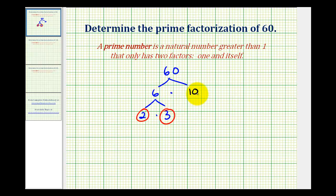Two factors of 10 would be 2 and 5, since 2 times 5 equals 10. We already know 2 is prime, and 5 is also prime because the only factors of 5 are 1 and itself. So now we have found the prime factorization of 60.